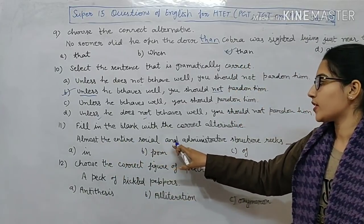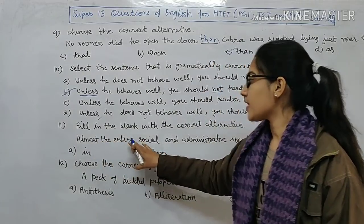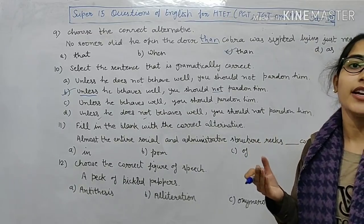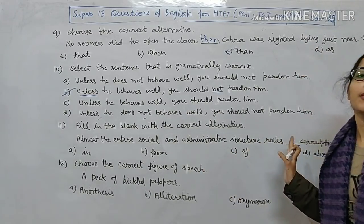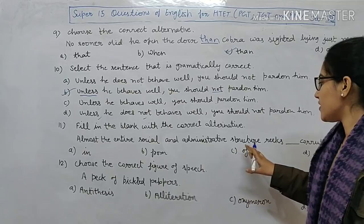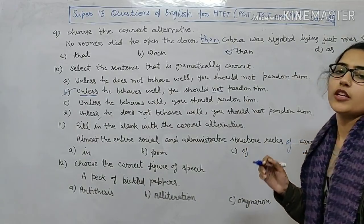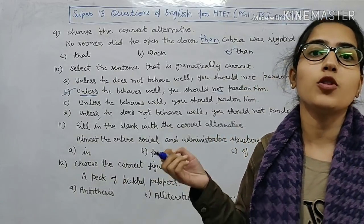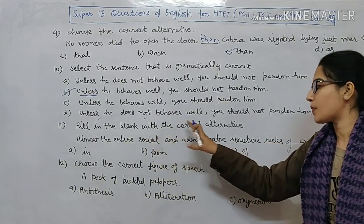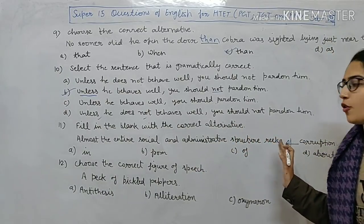Next: fill in the blank with the correct alternative. 'Almost the entire social and administrative structure ___ corruption.' Options: A — in, B — from, C — of, D — about. 'Rife' meaning 'se bhara hua' (filled with) takes the preposition 'of' — rife of corruption. Option C is correct.